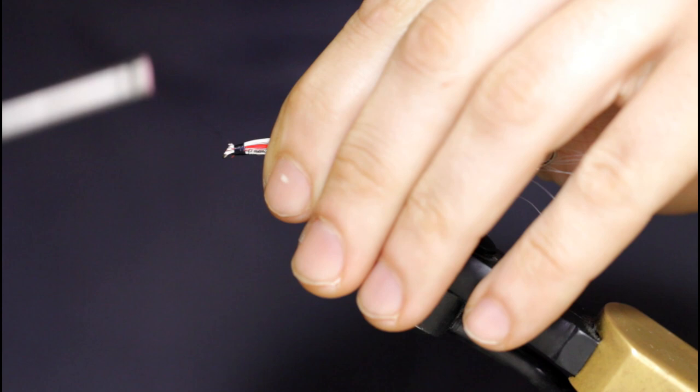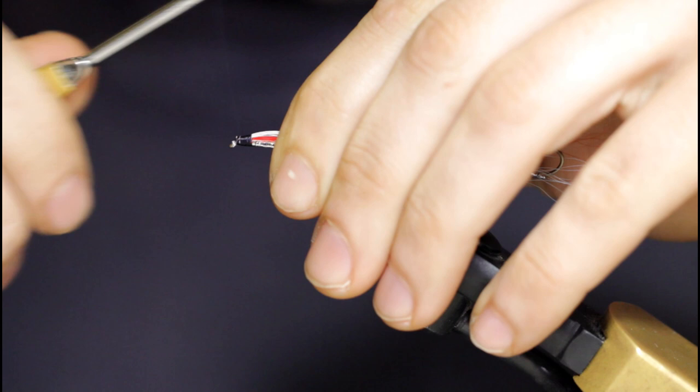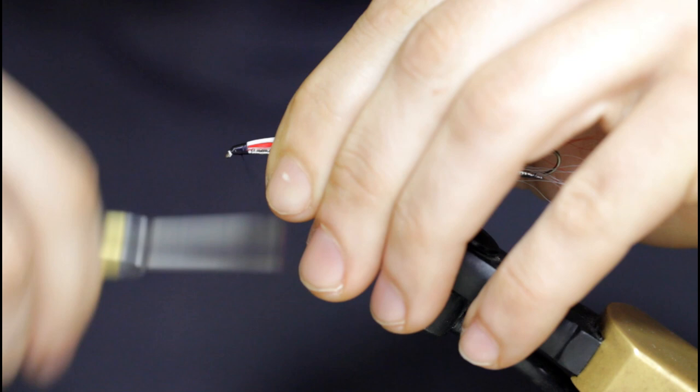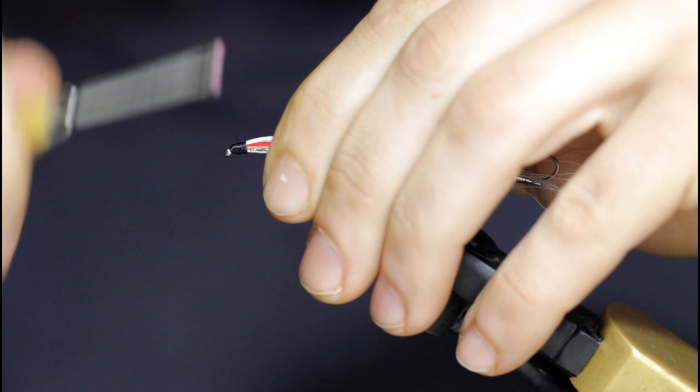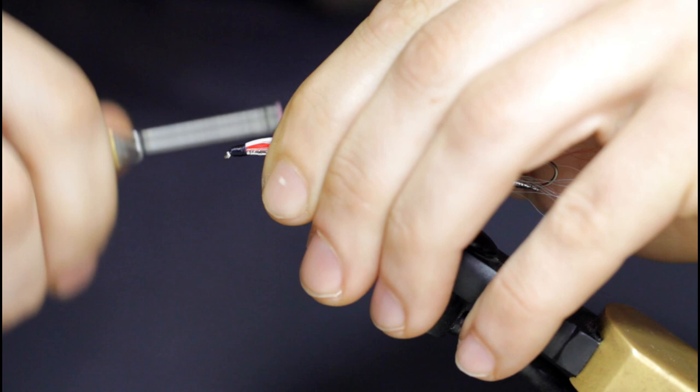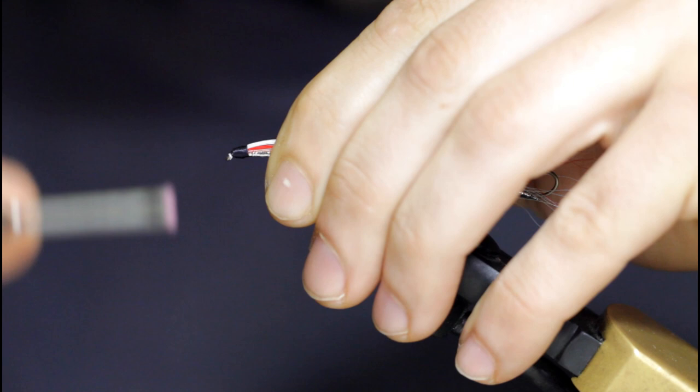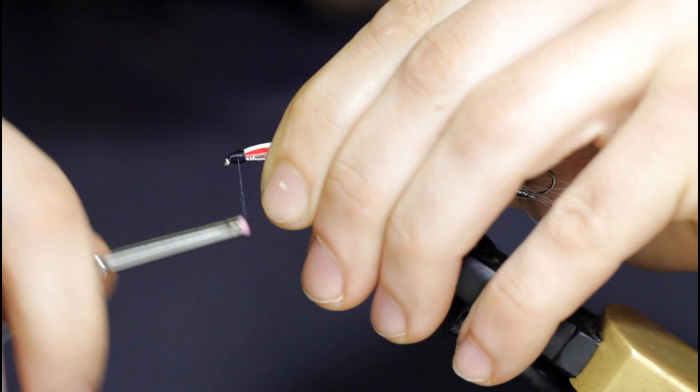And you can throw some Zap-a-Gap or super glue or whatever you have in right now. It's a good idea to really bind down the hair and keep it from pulling out. And now it's time to build up a nice head.